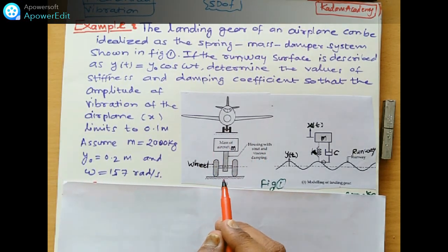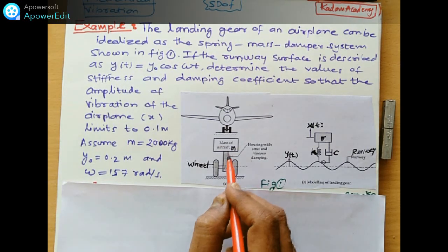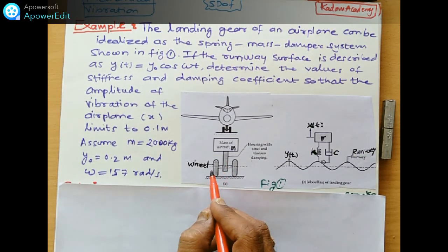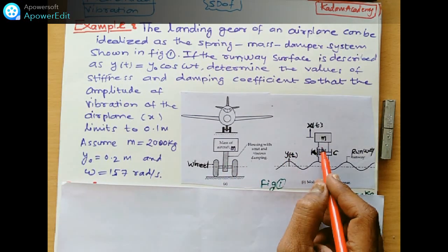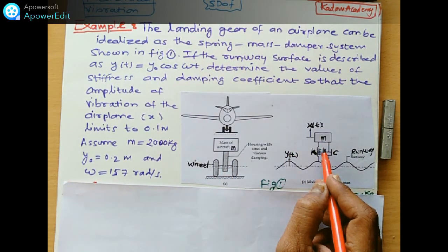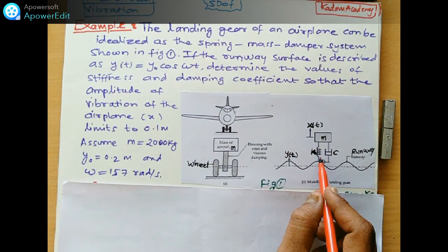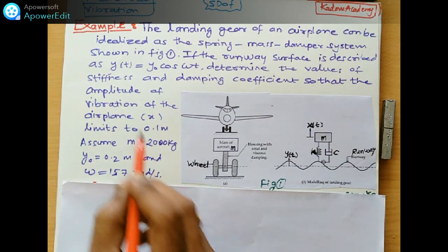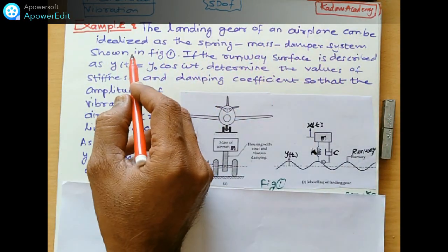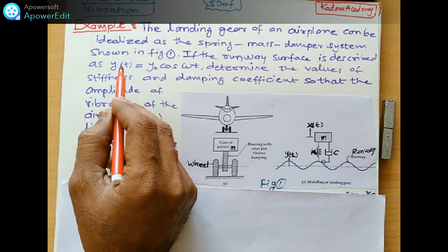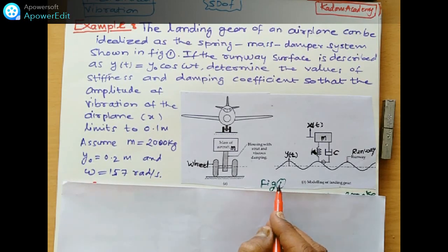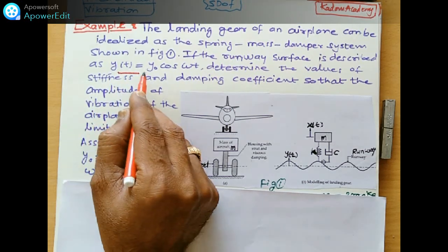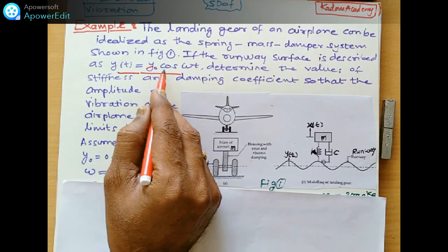This is the aeroplane and this aeroplane landing gear is there. The mass of aircraft is M and landing gear which will have the wheels on both sides. Inside this there is a mechanism, the landing gear of an aeroplane with the spring and damping devices to reduce the damping vibration. The landing gear of an aeroplane can be idealized as the spring mass damper system shown in this figure, Figure 1.